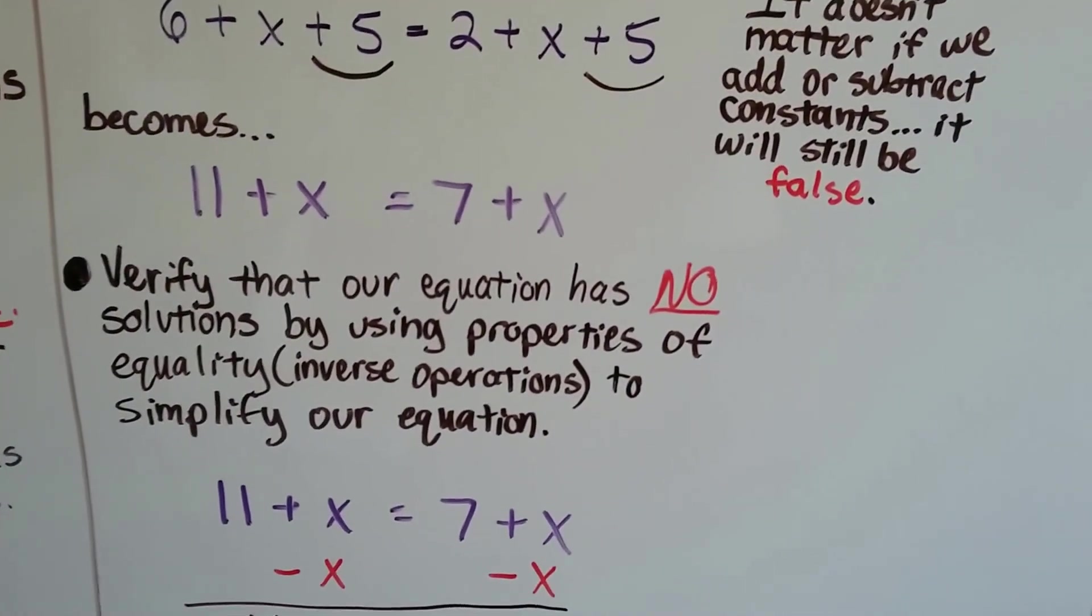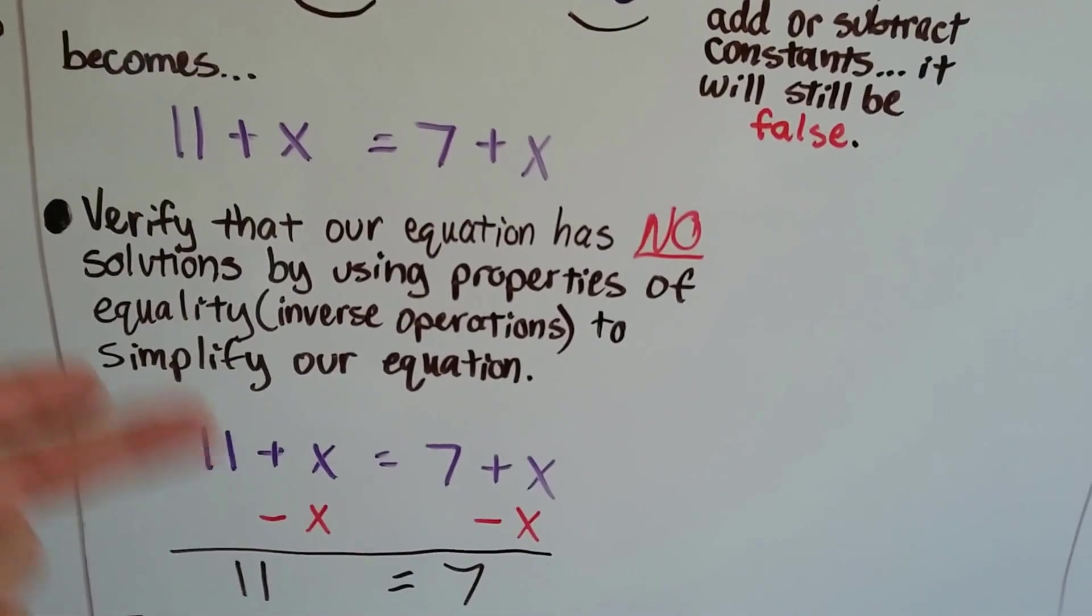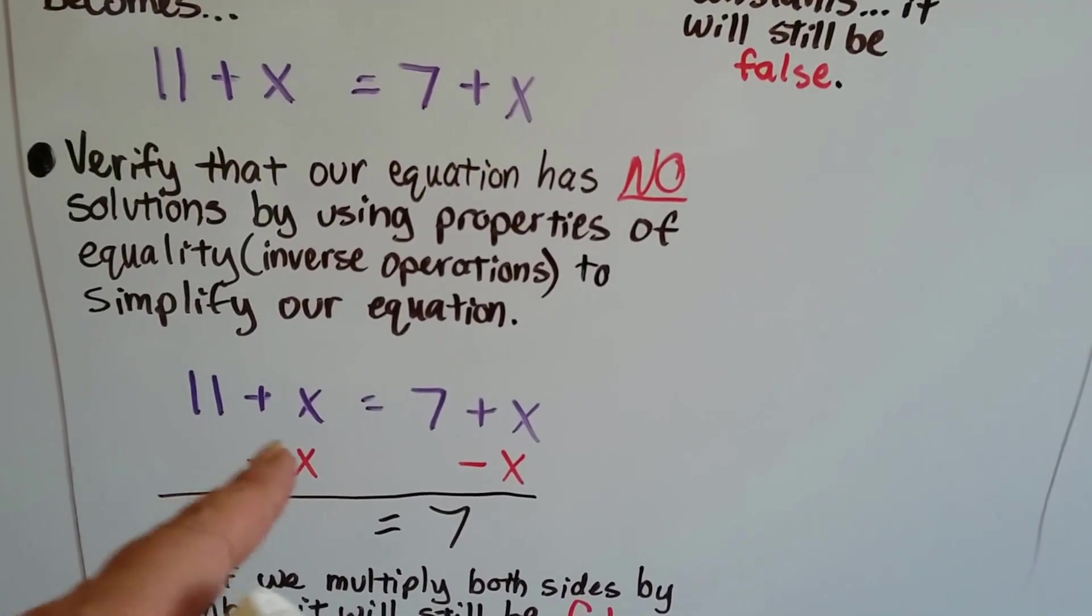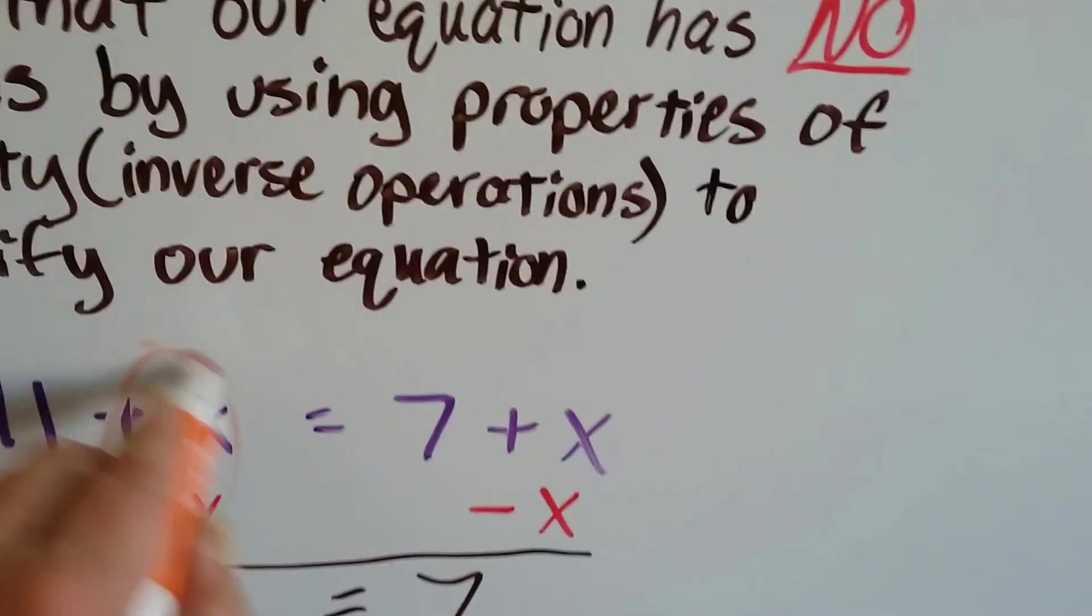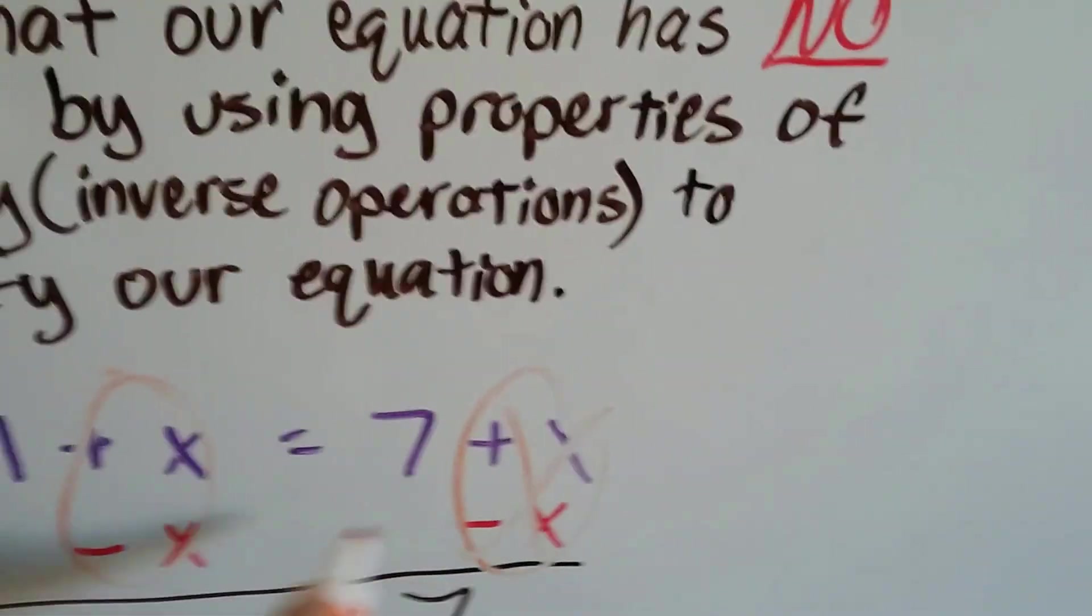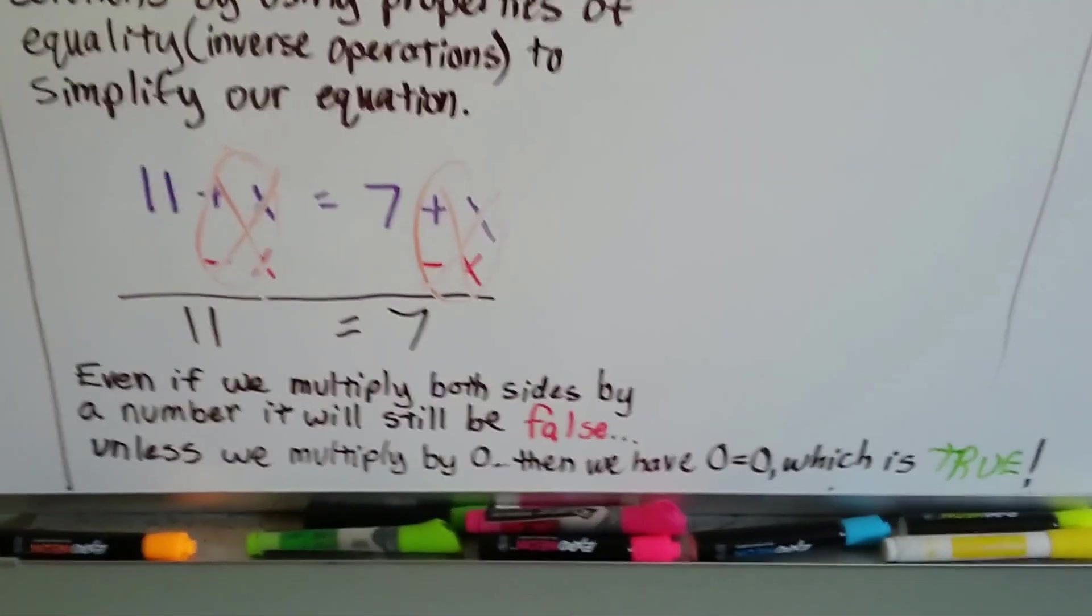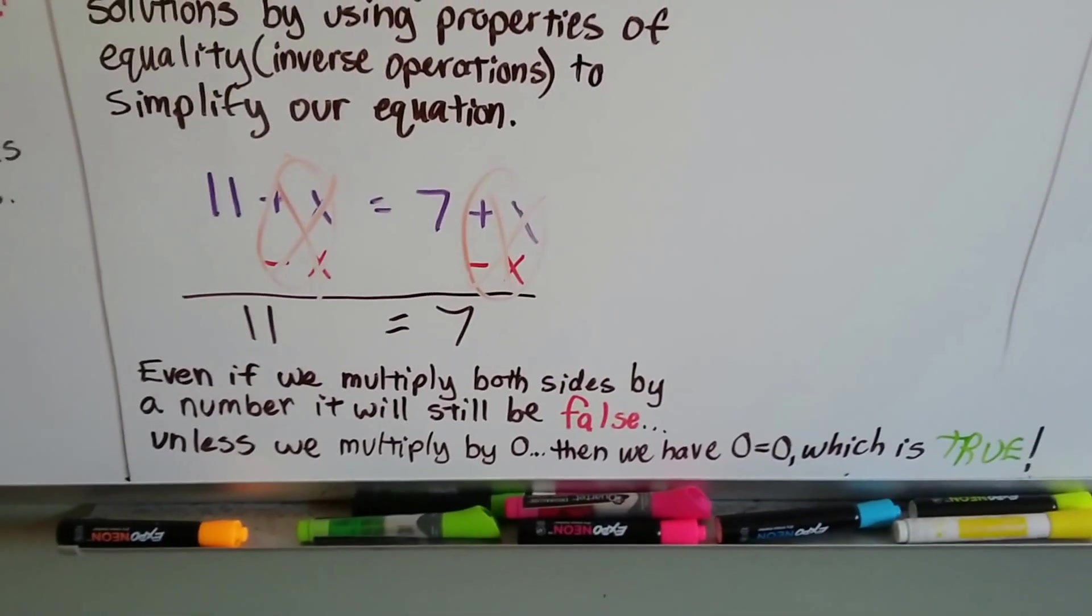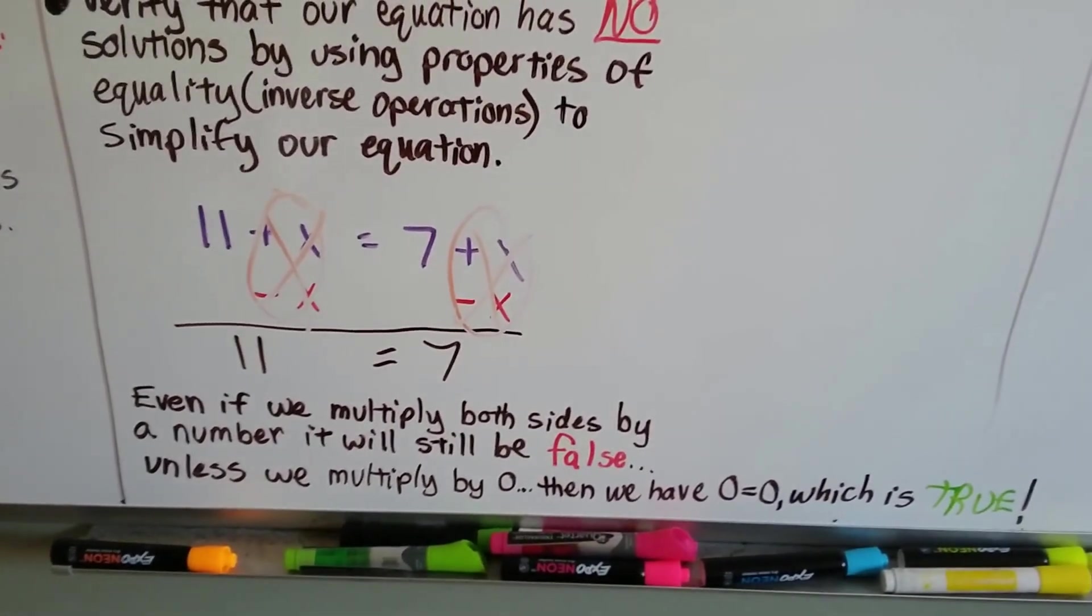We can verify that our equation has no solution by using properties of equality, those inverse operations, and simplify. So let's take away the x from each side. Let's create a zero pair here and a zero pair here and eliminate these. Now we've got 11 equals 7. Well, that's not true. 11 doesn't equal 7.